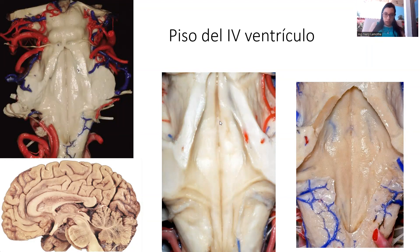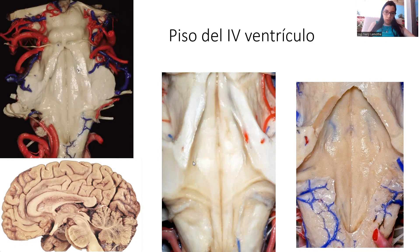We have another structure in each half of the floor of the fourth ventricle — that is the sulcus limitans. It separates every half into the medial part, which is called the medial eminence, and the lateral vestibular part. The sulcus limitans is more prominent in the pontine part and the bulbar or medullary part, where it forms the superior and inferior fovea.